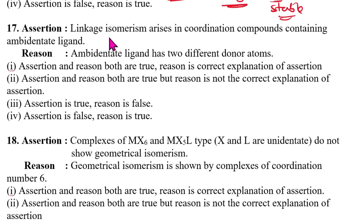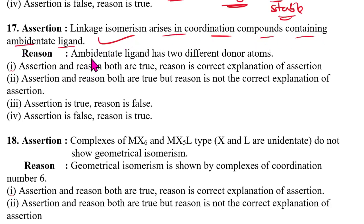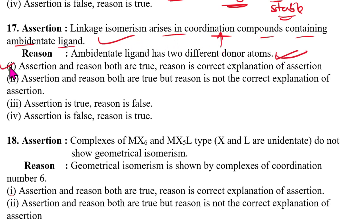Seventeenth question: linkage isomerism arises in coordination compounds containing ambidentate ligands — 100% correct. Ambidentate ligands have two different donor atoms — also correct. Because of this, they show linkage isomerism. Both assertion and reason are correct and reason explains assertion. Answer is option 1.